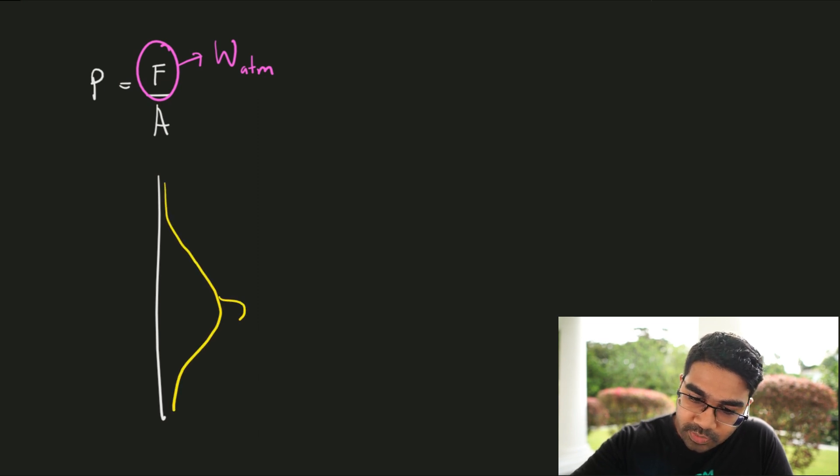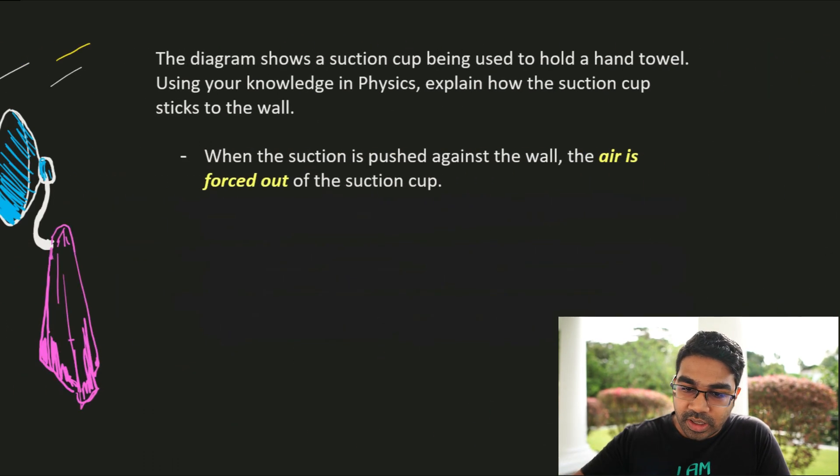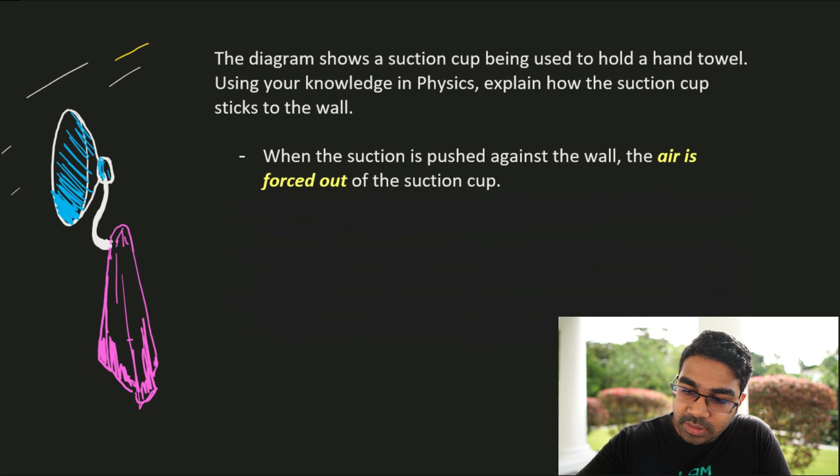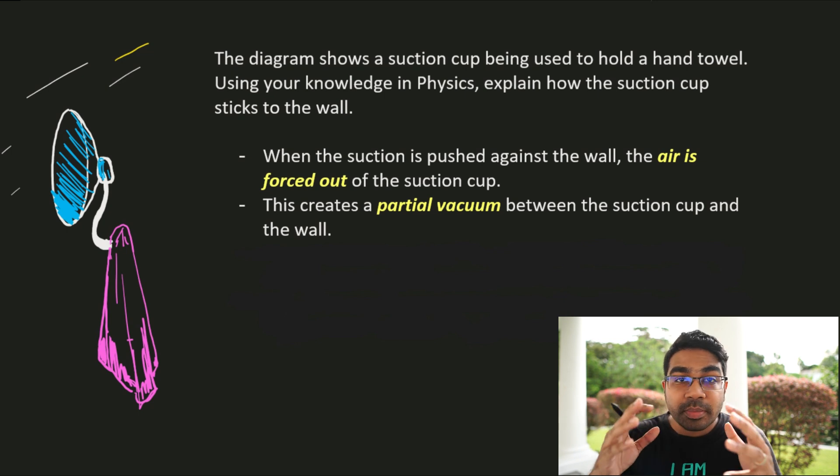So what happens when you press the suction cup in? When you apply a force here, what is going to happen is all the air inside is going to be forced out. The air between the suction cup and the surface of the wall is going to be forced out. And so, what is going to happen inside this region? Because the air is forced out, this creates a region of partial vacuum. A partial vacuum is created between the suction cup and the wall.